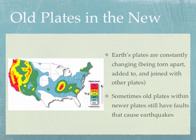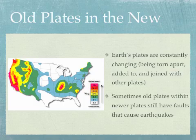Earth's plates are constantly changing — being torn apart, added to, joined with other plates. Sometimes old plates can actually be within newer plates, and the faults of these old plates can still cause earthquakes. Looking at the map of the United States, near Missouri, Arkansas, Kentucky, and Tennessee, there's a pink hot spot. That's actually the location of the New Madrid plate — an ancient plate that still gives us earthquakes today.